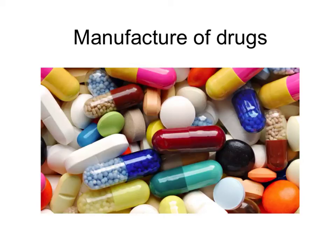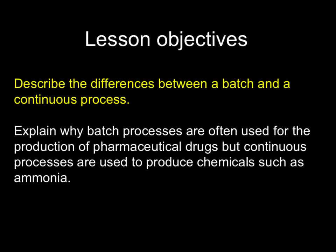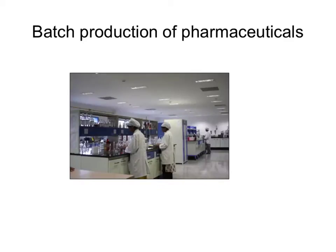This tutorial is about the manufacture of pharmaceutical drugs and looks at the advantages and disadvantages of the two main methods: batch process and continuous process. You need to understand the differences between batch and continuous processes and explain why batch processes are often used for pharmaceutical drugs whereas continuous processes are often used for large scale chemicals such as ammonia. Not all pharmaceuticals are produced by batch production.